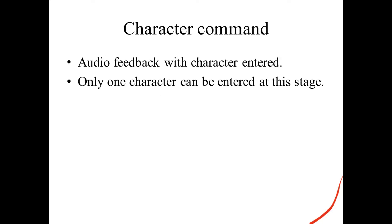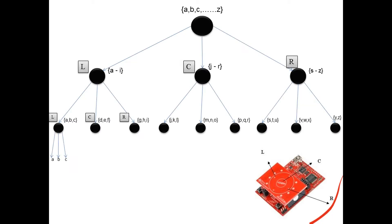The character command provides audio feedback for each character entered. Whatever character we enter from A to Z, it will provide audio feedback, and we can enter only one character at a time. This is the character entry system. We are using three buttons of the capacitive touch: left, center, and right. We divide A to Z into three parts: A to I, J to R, and S to Z, assigning each to one of the three buttons. When we press, for example, the left button for A to I, it further divides into three groups: A, B, C; D, E, F; G, H, I. Then further it divides to A, B, and C, allowing us to enter specific characters.